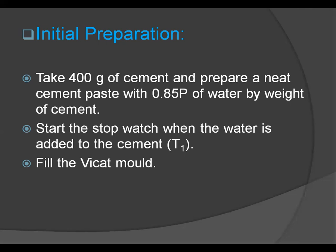Fill the Vicat mould resting on a glass plate with the cement paste as gauged above. Fill the mould completely and smooth off the surface of the paste to make it level with the top of the mould. The cement block thus prepared is called the test block.